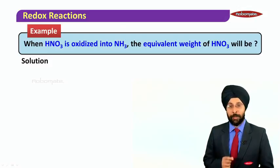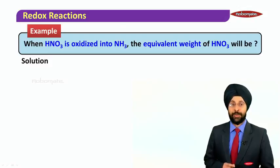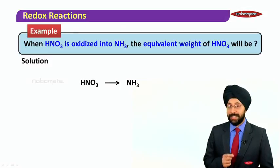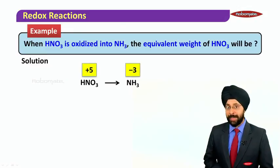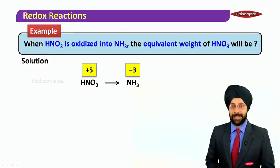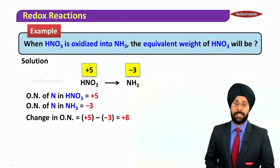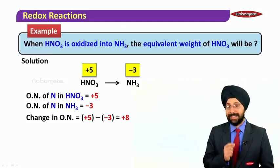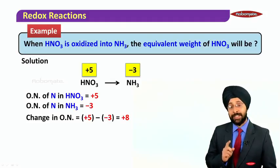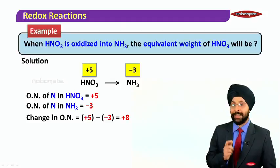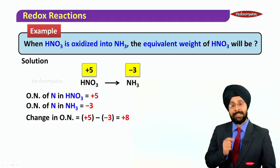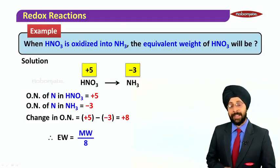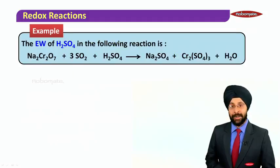When HNO3 is oxidized into ammonia NH3, the equivalent weight of HNO3 will be how much? First let us write the oxidation numbers. Nitrogen in HNO3 is plus 5, and in ammonia the oxidation number of nitrogen is minus 3. The change in oxidation number is initial minus final: plus 5 minus (minus 3) equals plus 8. Since there is only one nitrogen atom, the Z-factor becomes 8, and therefore equivalent weight equals molecular weight divided by 8.